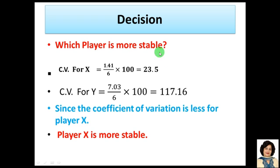Decision: Which player is more stable? We calculated coefficient of variation for X as 23.5, and for Y as 117.16. The one with less coefficient of variation will be more stable.